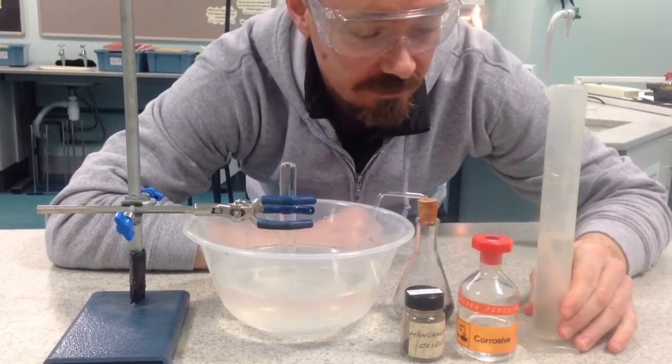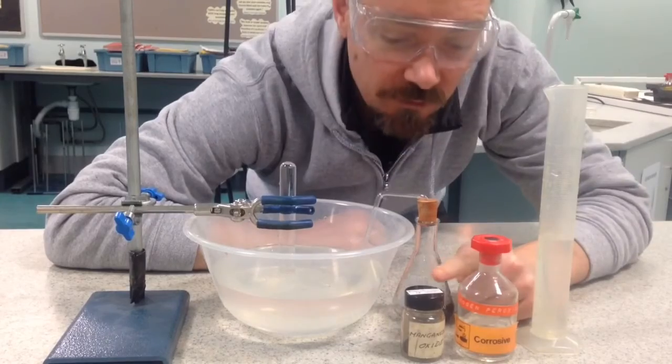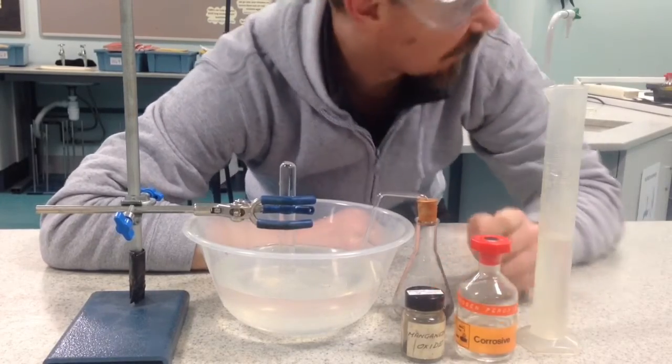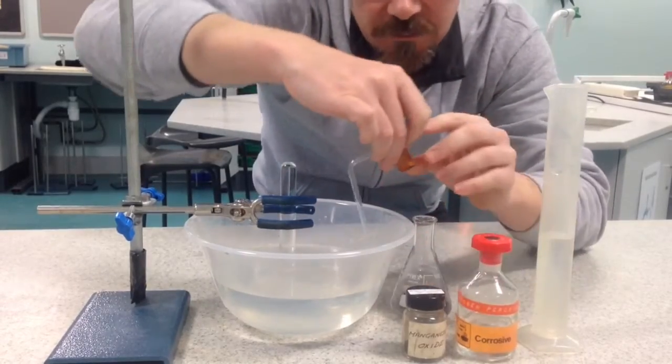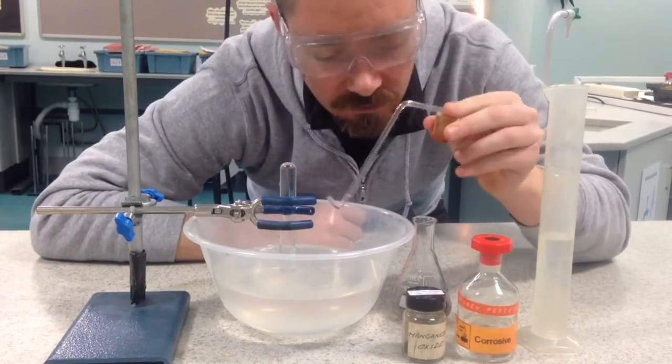We have a measuring cylinder, we have hydrogen peroxide, we've got manganese oxide, a conical flask, a delivery tube that comes out of the conical flask and into the water.